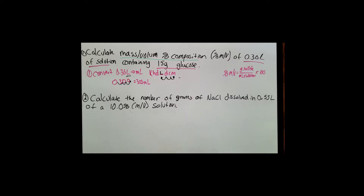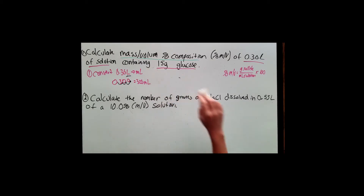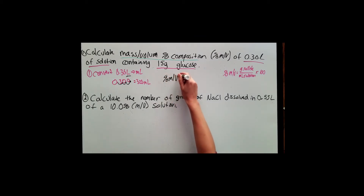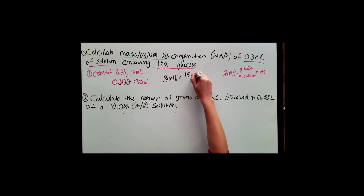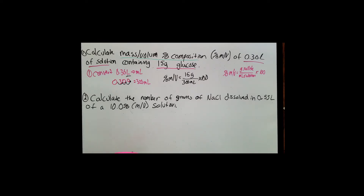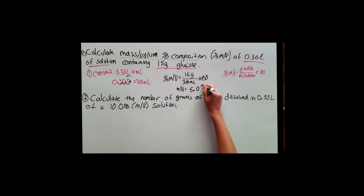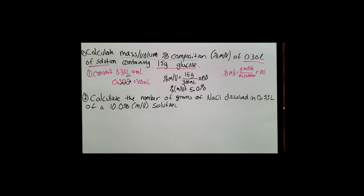Since that's successfully converted, I now have both pieces of information I need in the correct units. So let's plug that in to the equation. Percent mass-volume equals my grams of solute — 15 grams of glucose — divided by the milliliters of solution, multiplied by 100. So I get 15 divided by 300, multiplied by 100, and I get 5.0% — two significant figures. That means 5% of the solution is made up of glucose, and the rest is most likely water as the solvent.